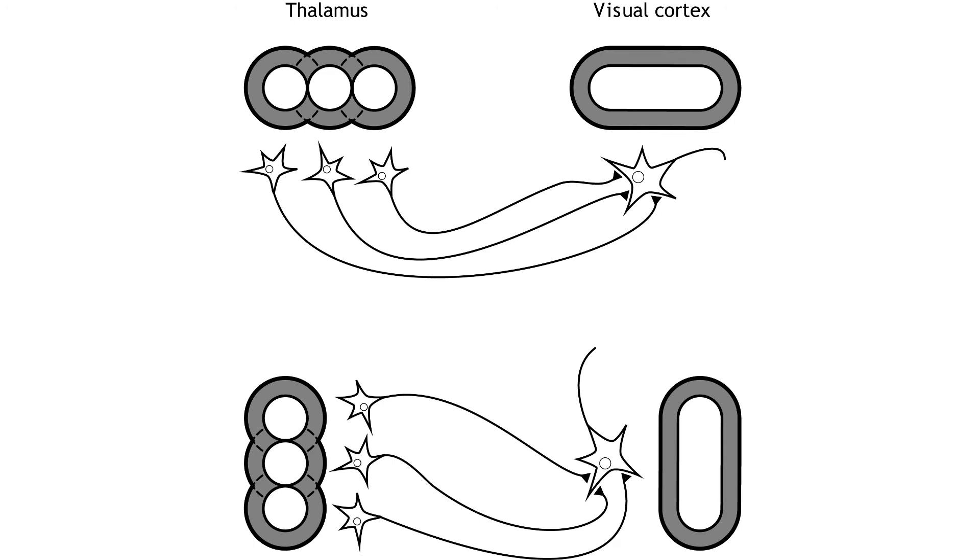As information moves from the retina to the cortex, receptive fields become larger and more complex. Receptive fields in the thalamus continue to be circular in shape, like the receptive fields of the retinal neurons. However, once information reaches the primary visual cortex, these circular receptive fields combine to create receptive fields that are activated by lines.